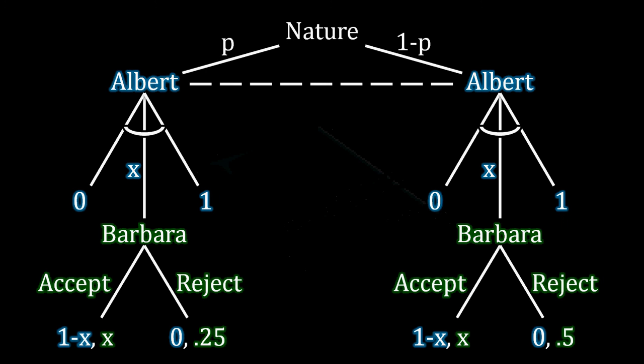We've been using the same model to illustrate many different important points about what uncertainty does to a bargaining environment. This is a situation where Albert is uncertain of whether Barbara has a strong or a weak outside option. With probability P she has the weak outside option, and with probability 1-P she has the strong outside option. We use that dashed line stretching between the two Alberts to represent the fact that Albert isn't sure whether Barbara is weak or strong when he makes the offer.